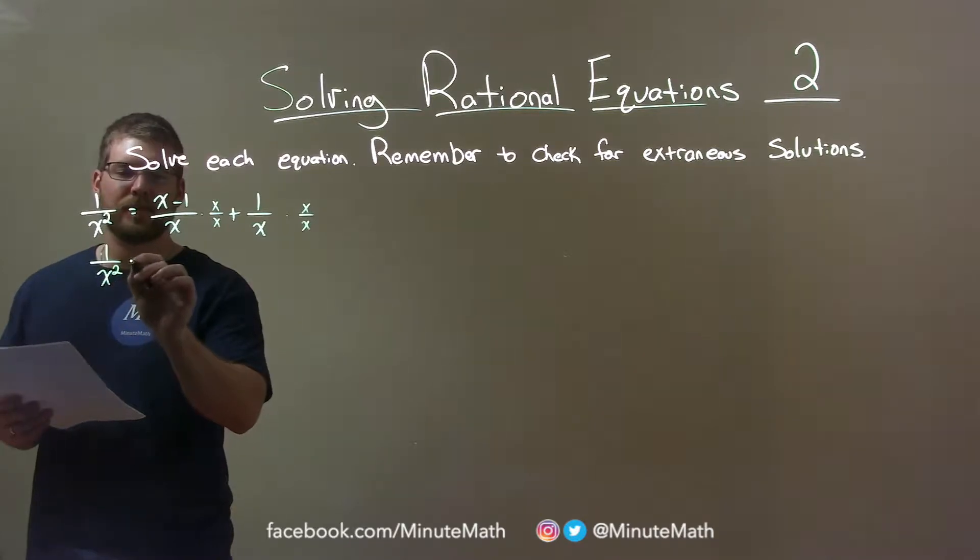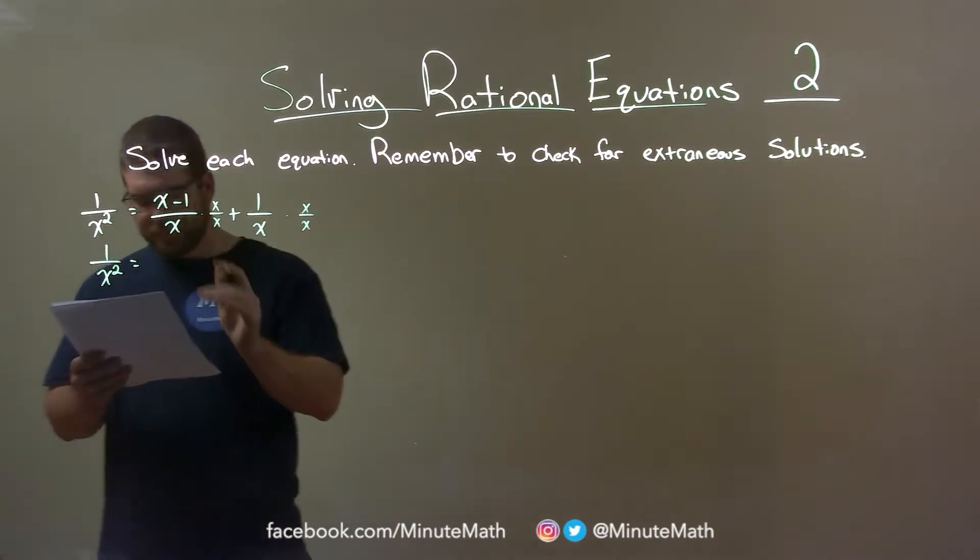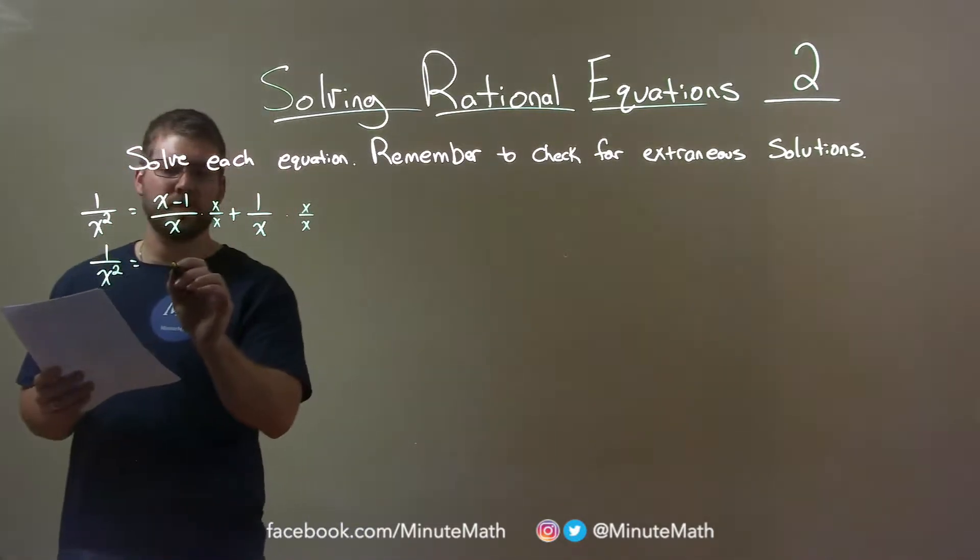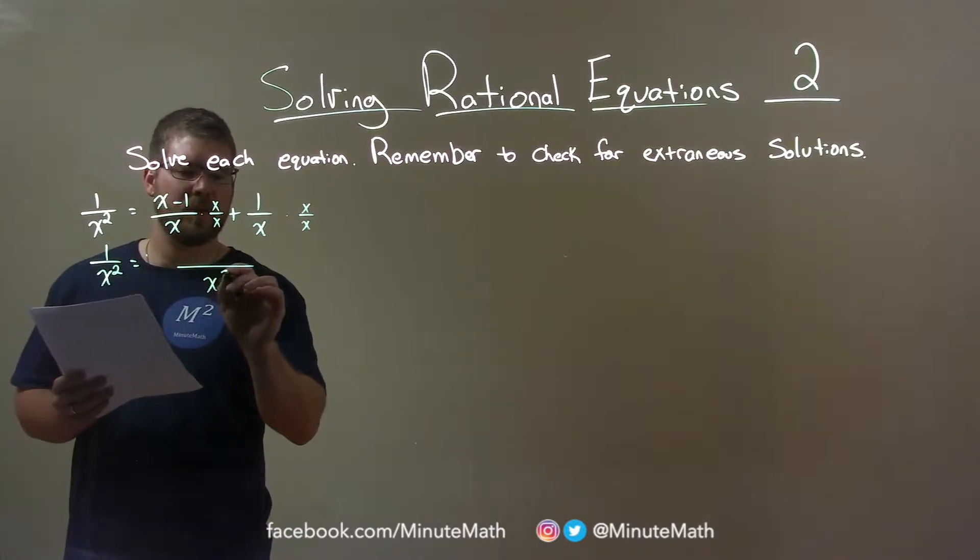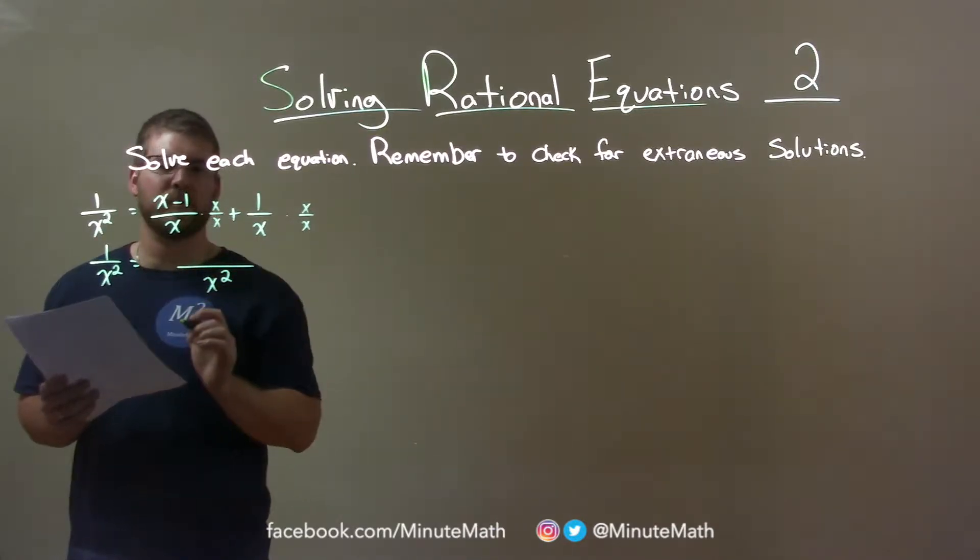So 1 over x squared here is equal to... Now let's make sure we distribute. We have an x squared in the denominator, right? x times x is x squared.